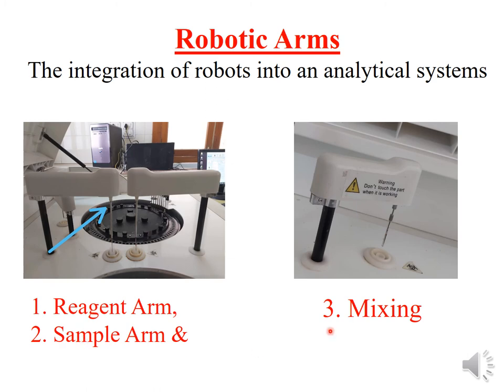They act like hands, and the number of arms depends upon the type of machine. Some machines may have just one arm, two arms, or three or four arms, depending on what the lab wants to acquire.